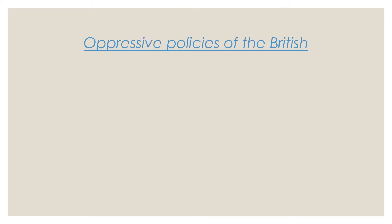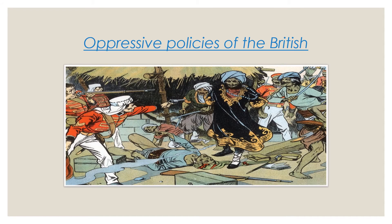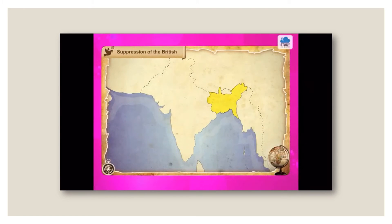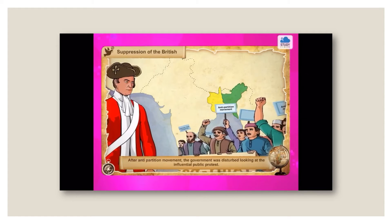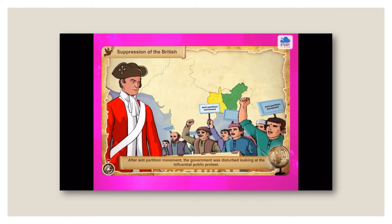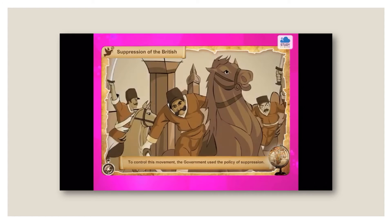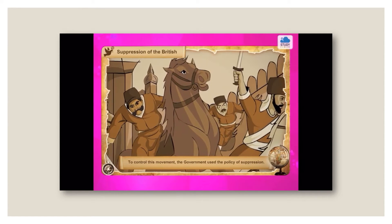Students, the strong protests by the Indians during the anti-partition movement deeply disturbed the British. The British resorted to oppressive policies in order to prevent people from coming together and getting united against them. Let us have a look at these oppressive policies. After the anti-partition movement, the government was disturbed looking at the influential public protest. To control this movement, the government used the policy of suppression.